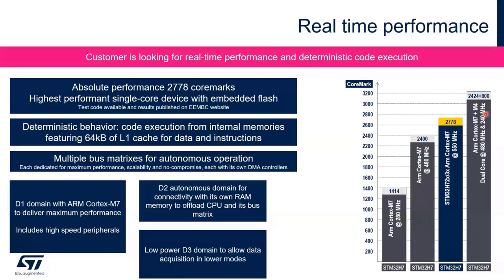I would also like to highlight deterministic behavior for code execution from internal memory. Thanks to the 64-kilobyte L1 cache for data and instructions, you can have very fast code execution from internal memory. Multiple bus matrices enable autonomous operations. The D1 domain with ARM Cortex-M7 provides maximum performance at 550 MHz with high-speed peripherals. The D2 domain can offload the CPU — it has its own RAM memory, so DMA in this domain can handle activity without going through the core.